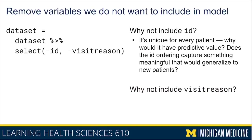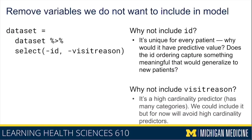Why not include visit_reason? The reason that patient is there for a visit might be important for predicting insurance type, but it's a high cardinality predictor, meaning it has many different categories. Different models handle high cardinality variables very differently, and until you know more about how individual models work, it's best to leave out these high cardinality variables. For now, any variable with more than 10 or 15 levels should essentially be excluded until you have a better understanding of the underlying algorithms.